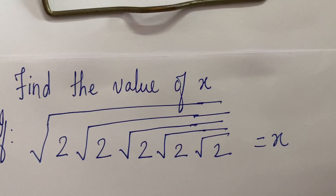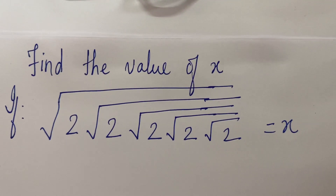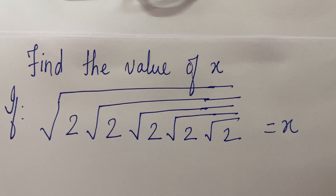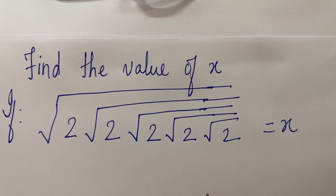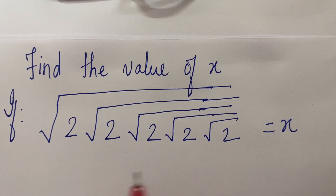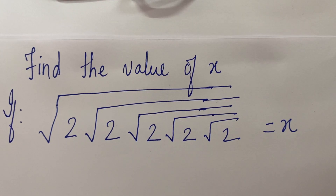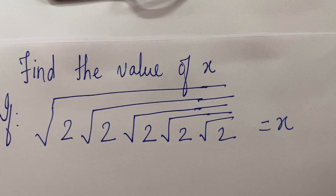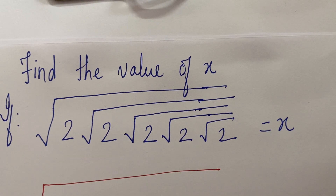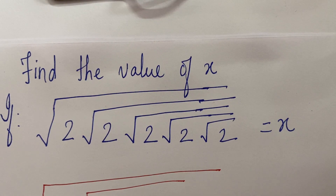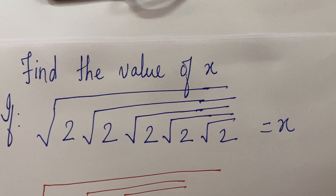Now dear students, let us see the sum — how to simplify, how to get the value of x. So the first thing we will do is, we will square both the sides. Now if you square both the sides, you will get this value.